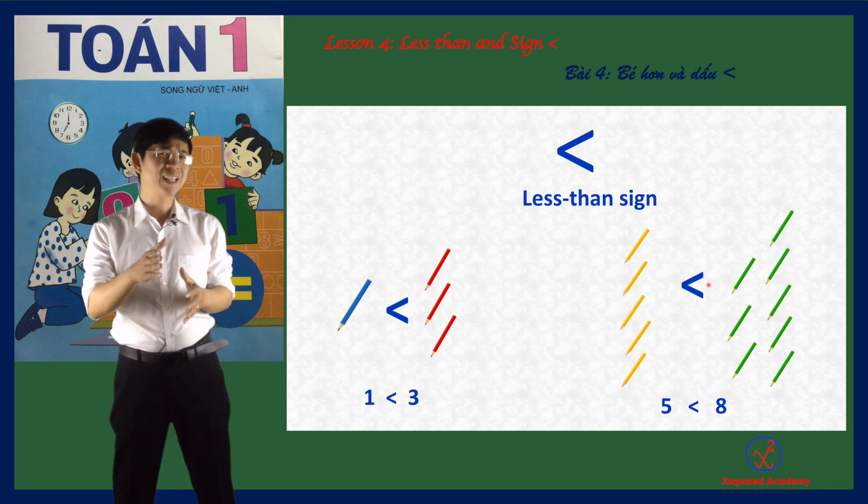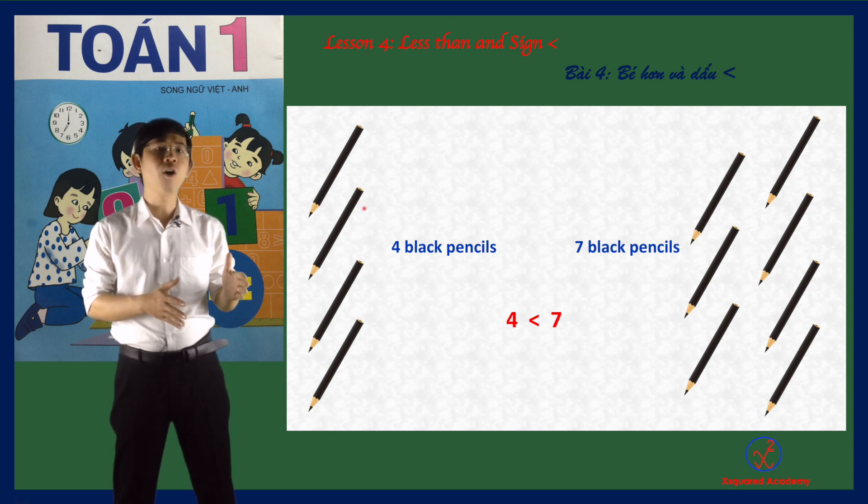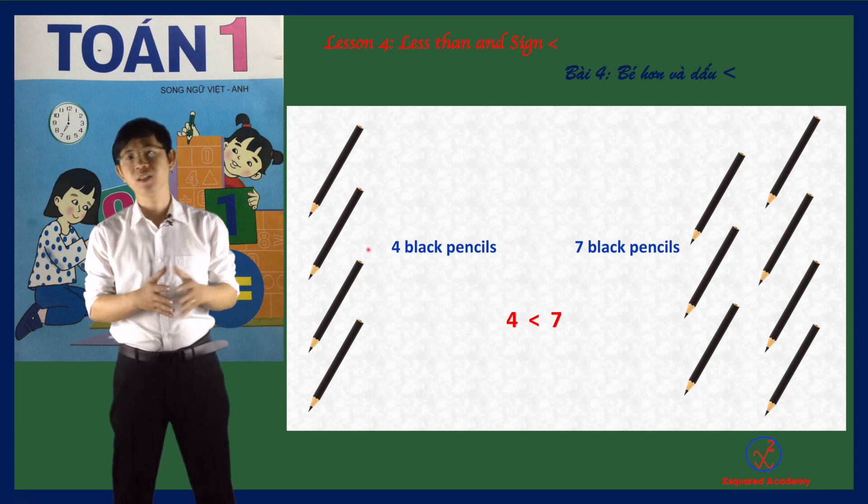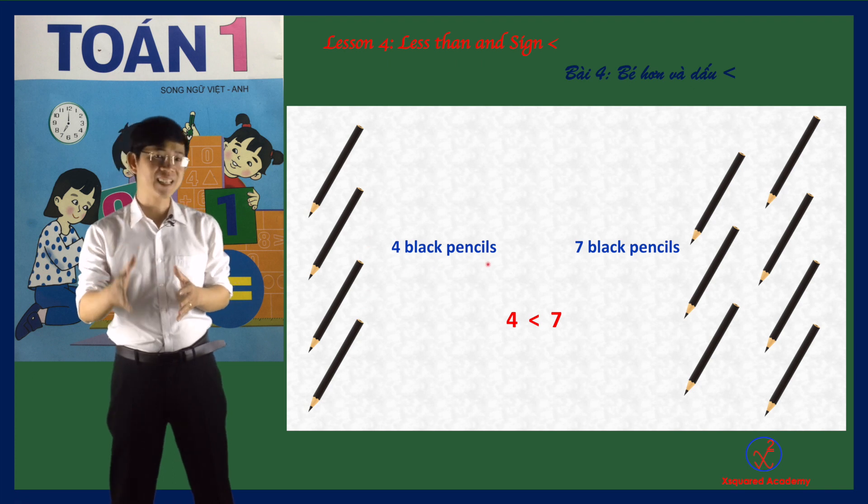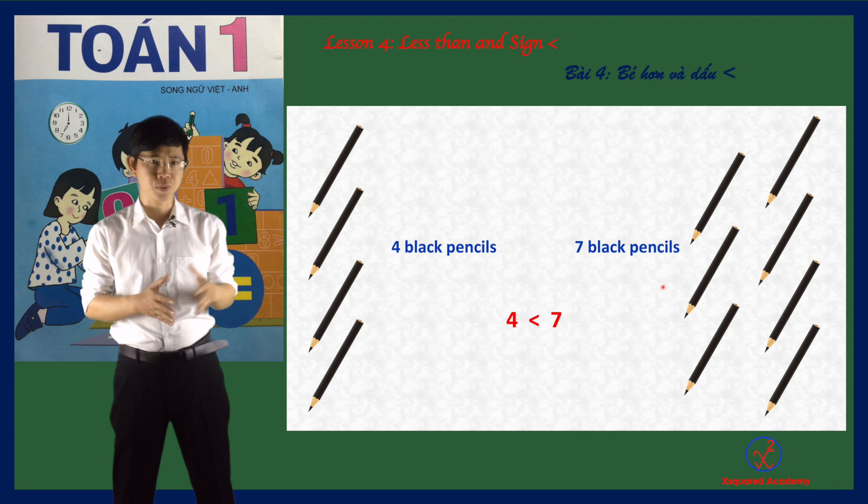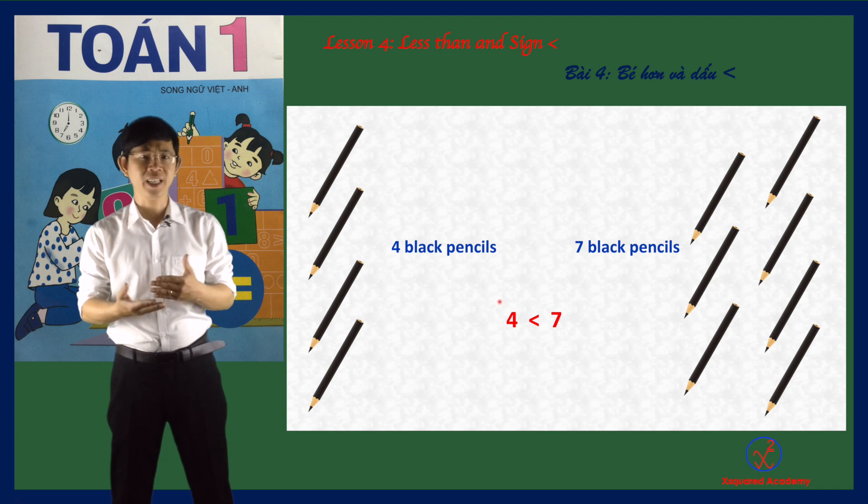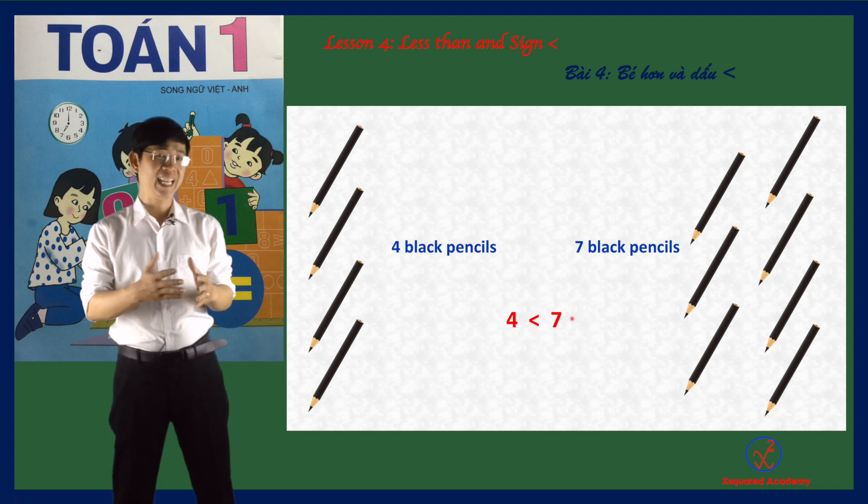Let's do exercises to understand. On this side, I have four black pencils. And on that side, I have seven black pencils. So four is less than seven. We write 4 < 7.